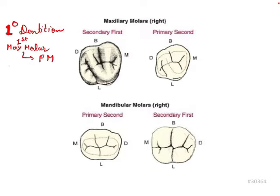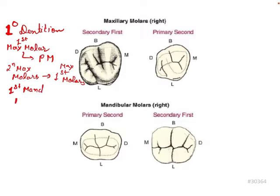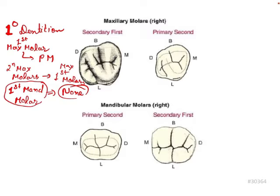The primary second maxillary molar is resembled by the permanent maxillary first molar. Coming to the lower dentition, the primary mandibular first molar does not resemble any permanent tooth — none. This is a very important exam question: which primary tooth does not resemble any permanent tooth? The answer is the primary mandibular first molar.